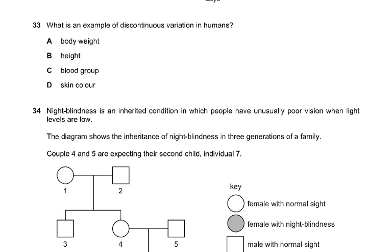Question number 33: What is an example of discontinuous variation? Blood group is discontinuous variation — we've covered this many times. The rest of the options are all continuous variation.